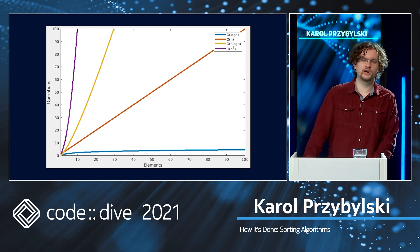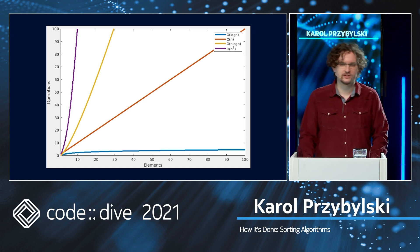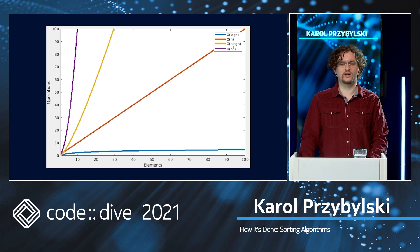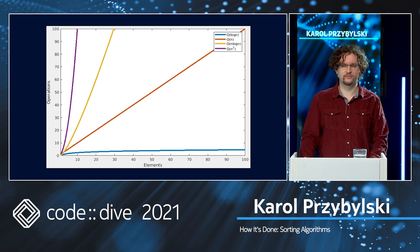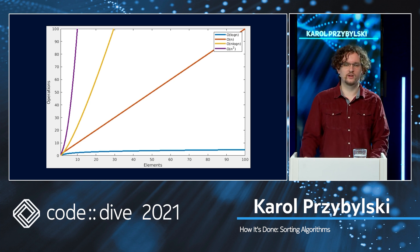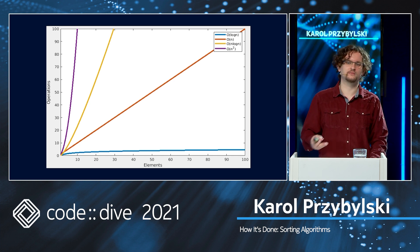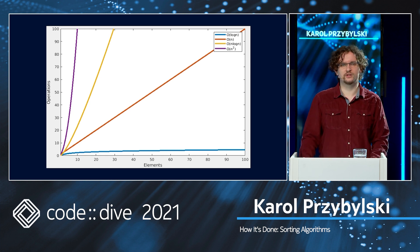Here we have a graphic representation of complexities. The best one is the blue one — logarithmic complexity. This is the complexity of, for example, binary search algorithm. If we want to find a number in a sorted array by using binary search, for an array of 100 elements we would need to perform around seven operations in the worst case. On the bottom axis we have elements, on the left axis we have operations. Then we have linear complexity, then N log N, and finally N squared — each one worse than the previous one.